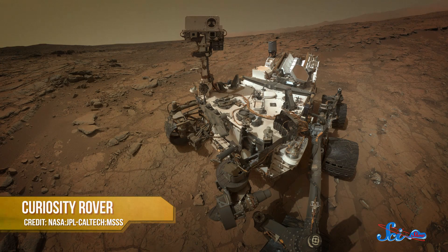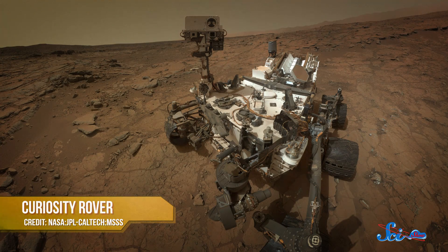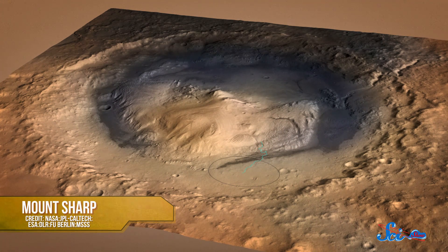After two years and nearly nine kilometers, NASA's Curiosity rover has finally reached its ultimate destination, Mount Sharp, a potential goldmine of Martian geologic history.